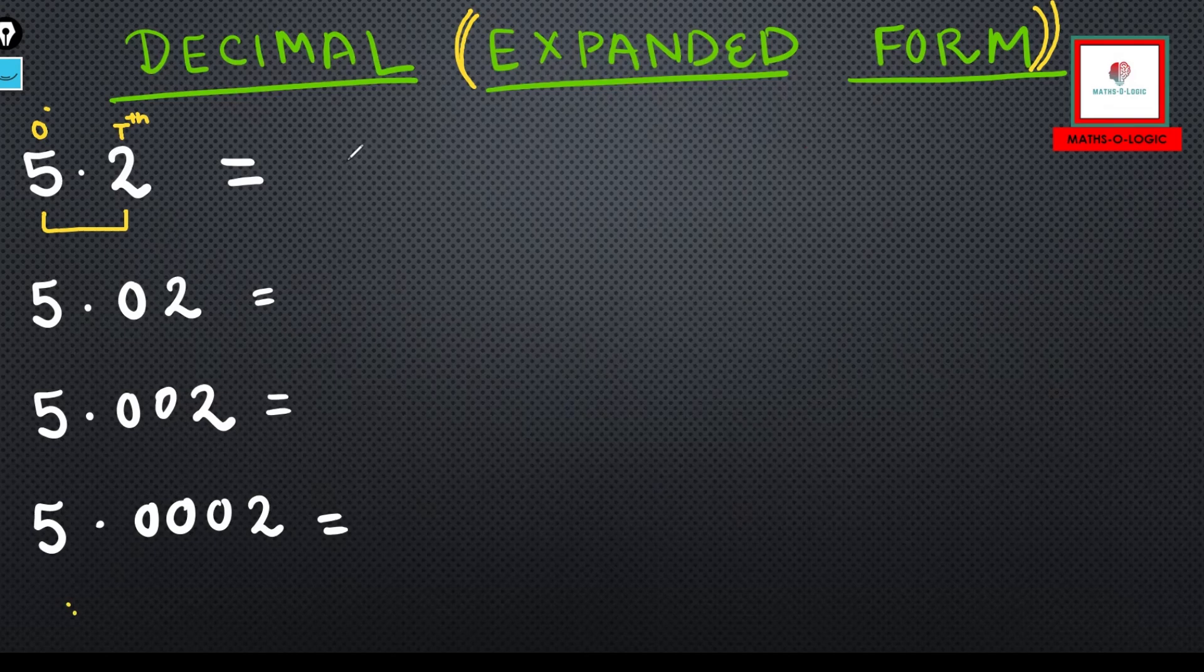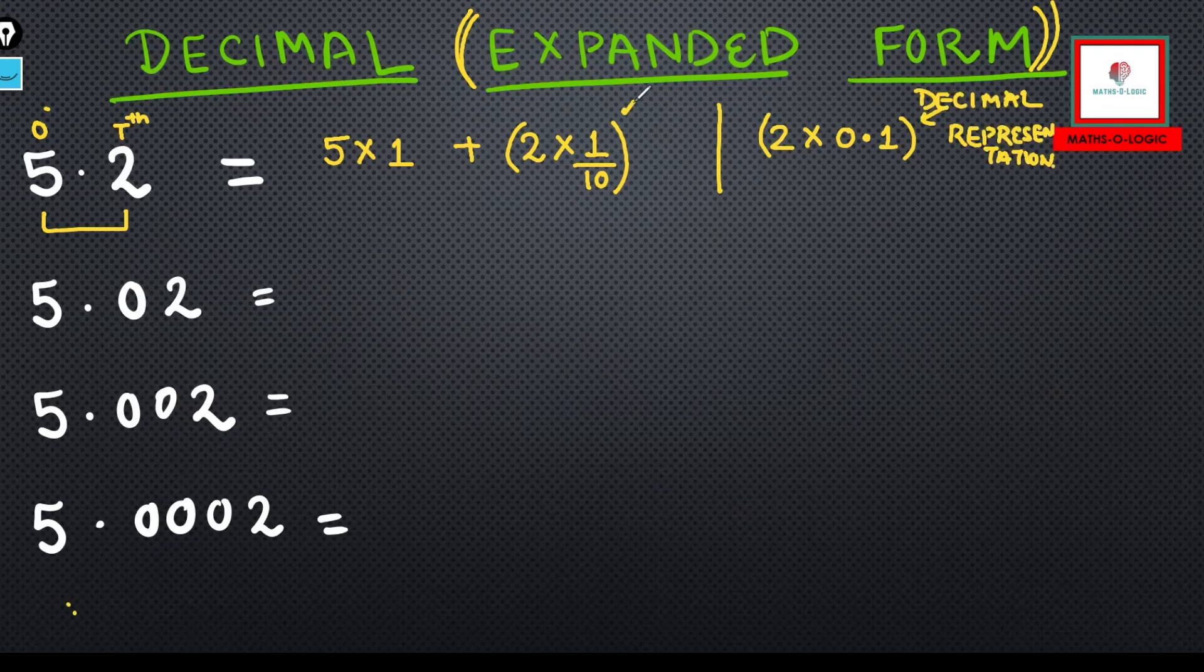There are two ways in which you can write: as in a fractional form, or you can write as 2×0.1 also. Both the ways are correct and depends on the question what is it asking you. This is in the decimal form and this is the fractional representation. I'm going to write both the forms for your convenience.